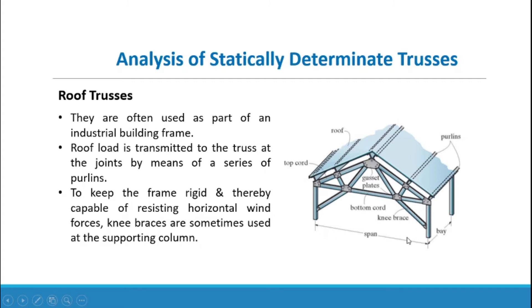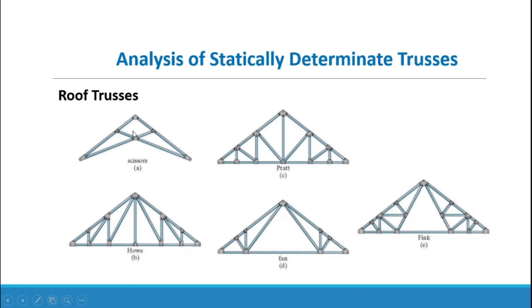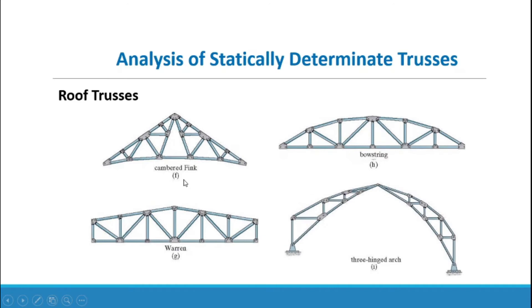Other key dimensions of a roof truss include the span and the bay, measured from column to column. Common types of trusses include the scissors, Howe, Pratt, Fink, cambered Fink, Warren, bowstring, and three-hinged arch.